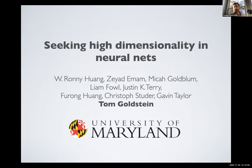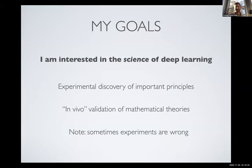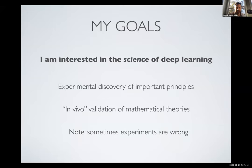Thank you very much. I'm going to talk about a range of different things we're doing in my lab that are all related to theory. I call this talk 'Seeking High Dimensionality in Neural Nets' because some of the things we'll talk about involve the benefits of high dimensionality, and some are also related to the benefits of low dimensionality. The title is shorter than the one on the web page — we're doing compressed sensing on the title, taking an undersampling to make it more efficient.